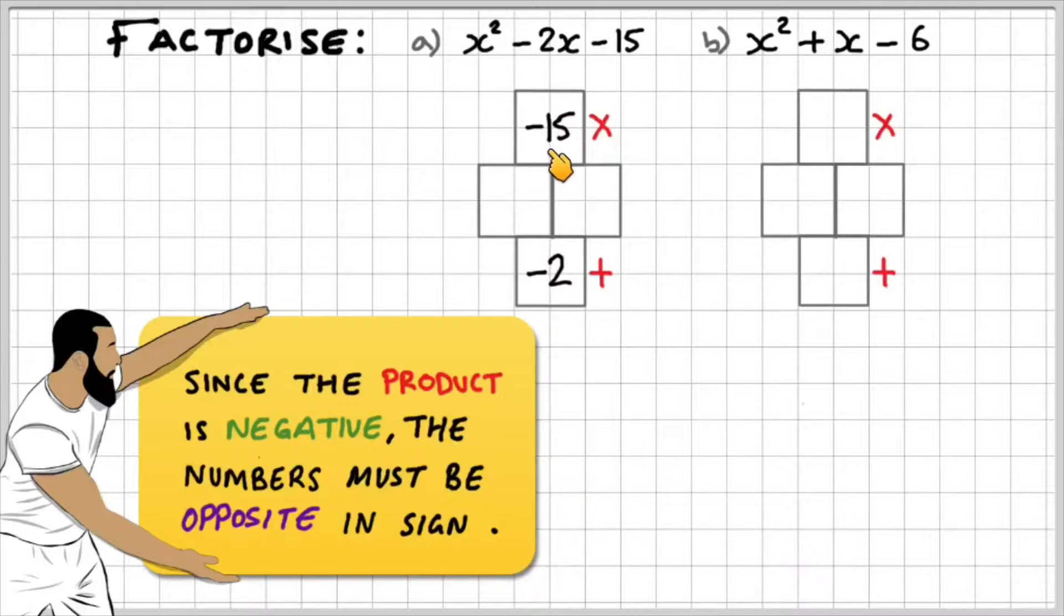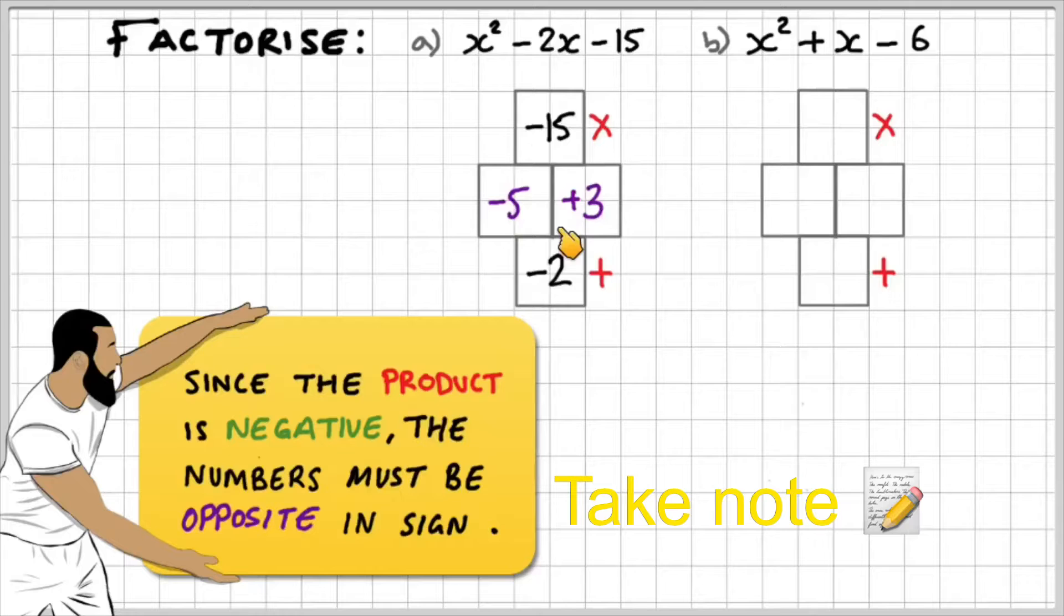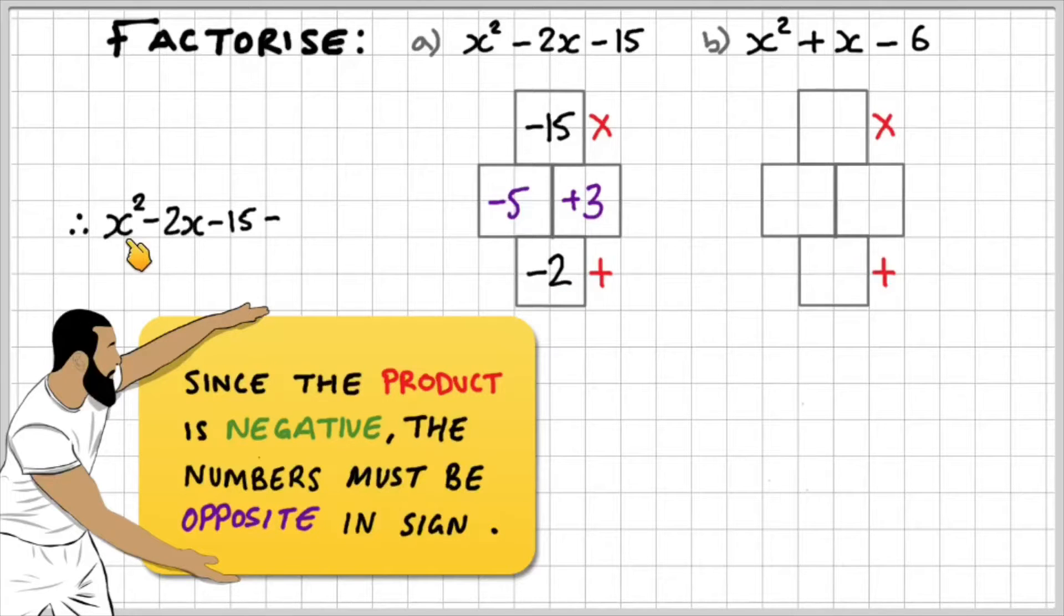I have a product of negative 15 and a sum of negative 2. My two factors have to be opposite in sign. We've got negative 5 and 3. The product of negative 5 and 3 gives us negative 15, and the sum gives us negative 2. Therefore, x squared minus 2x minus 15 is equal to x minus 5, x plus 3.